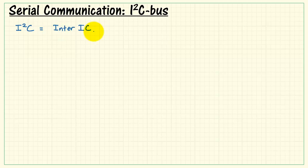I2C is an abbreviation for Inter IC. IC is an abbreviation for integrated circuit, and that's where the two I's come from.